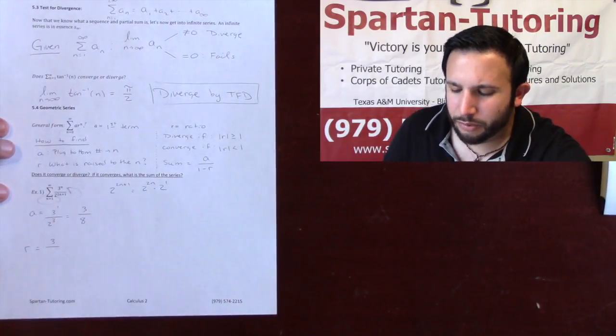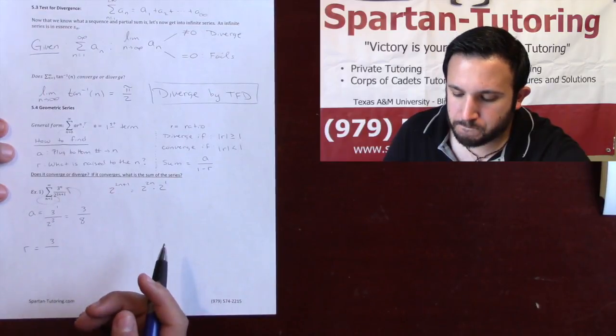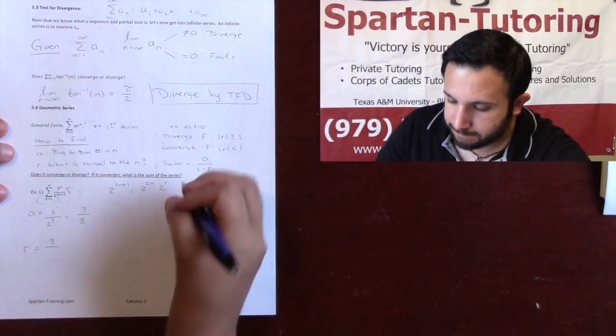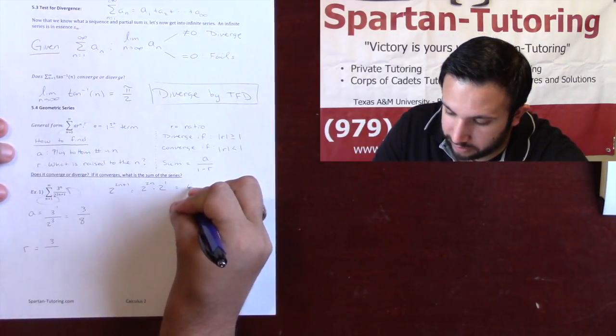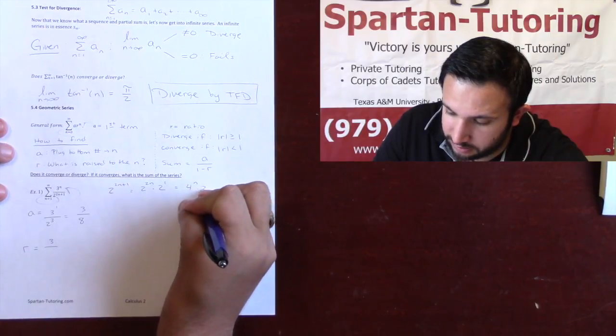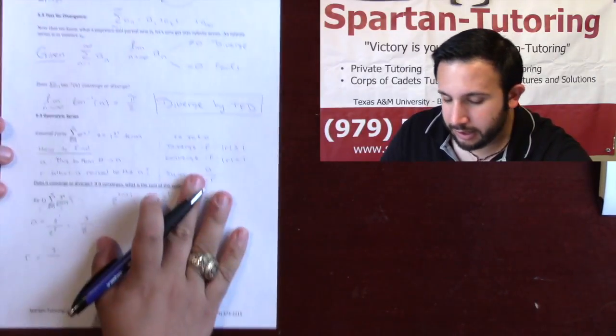Like I said, on bottom, I just care about what's being raised to the n. But I have a 2n. So I can write this as 4 to the n times 2. And how the heck did I do that?